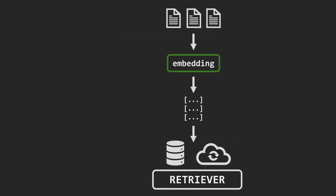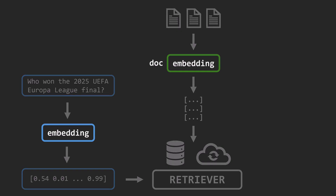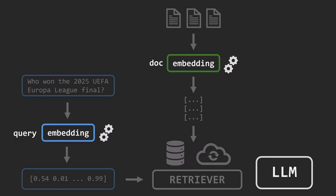What's even more interesting is that we can train the RAG system to improve its accuracy. We can use different embedding models for the documents and the query. During training, the query model can be fine-tuned to find better matches. The document model can also be updated, but that's more computationally expensive since it requires re-embedding a large number of documents in the database. And of course, the language model itself can be fine-tuned too.